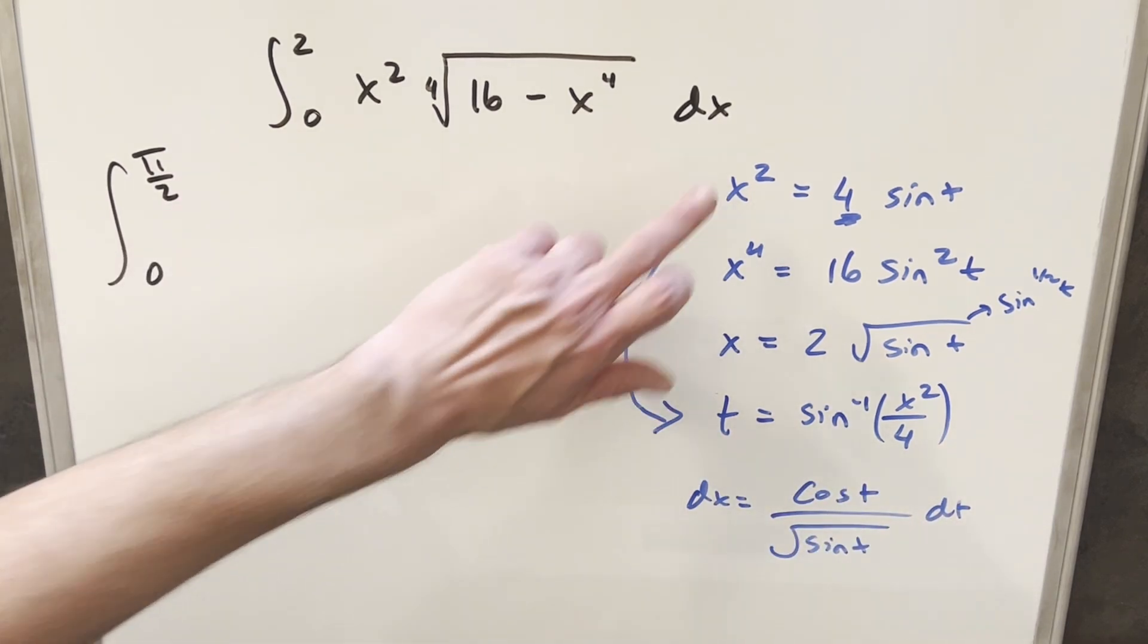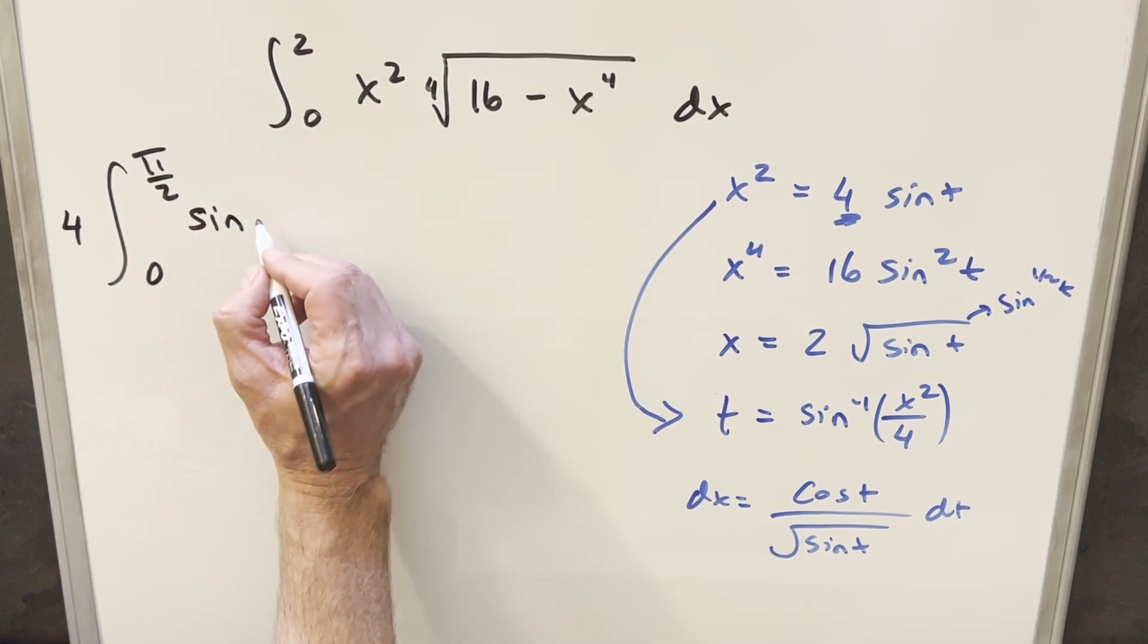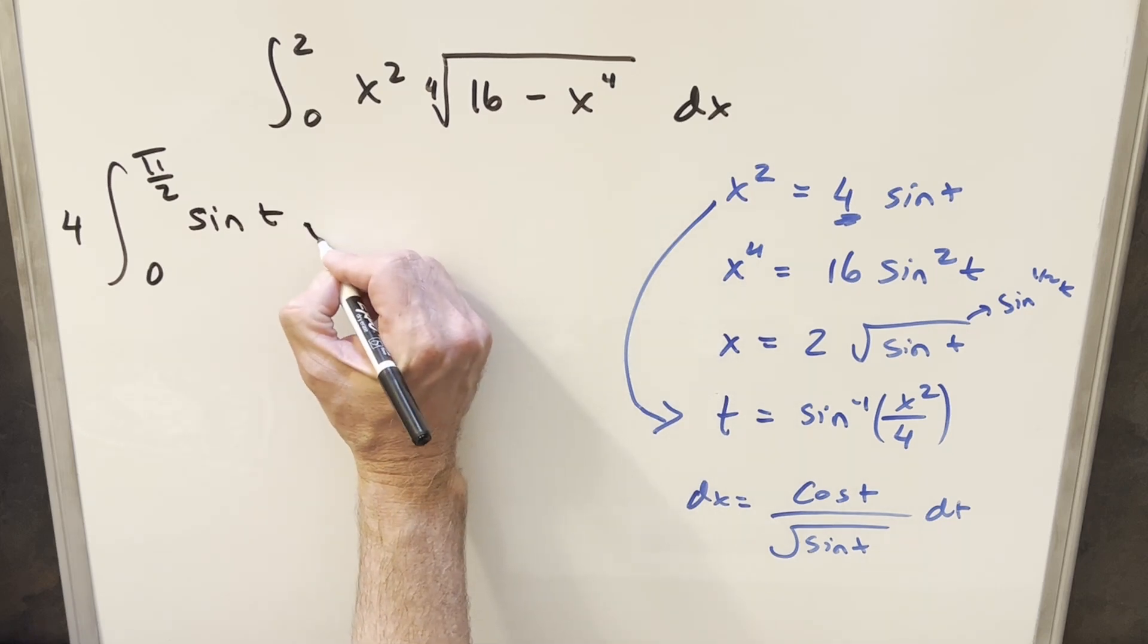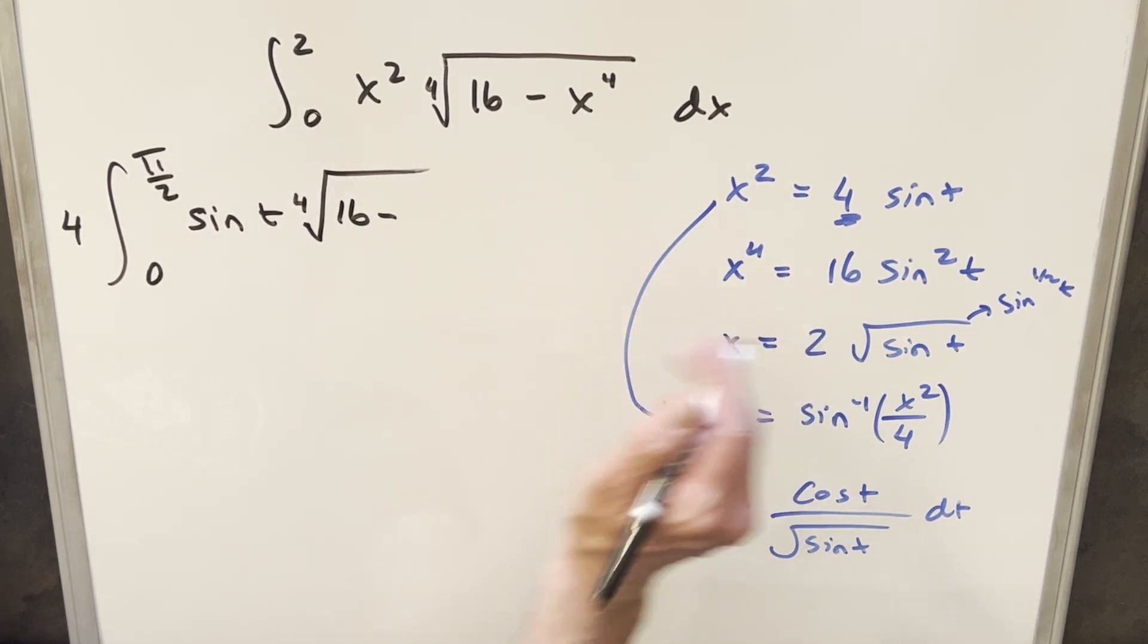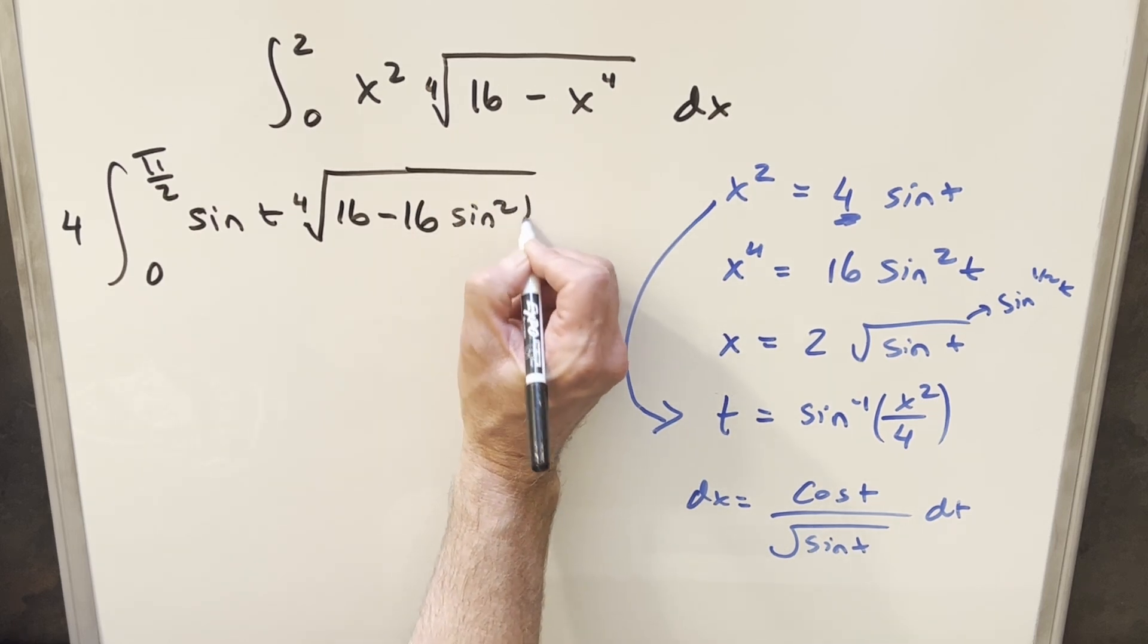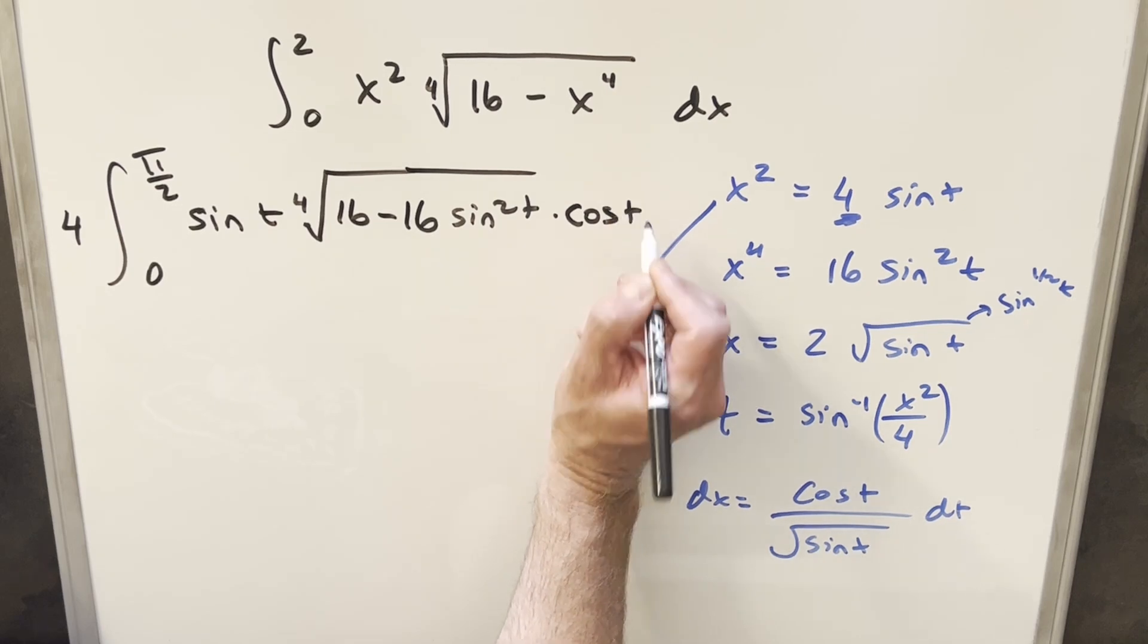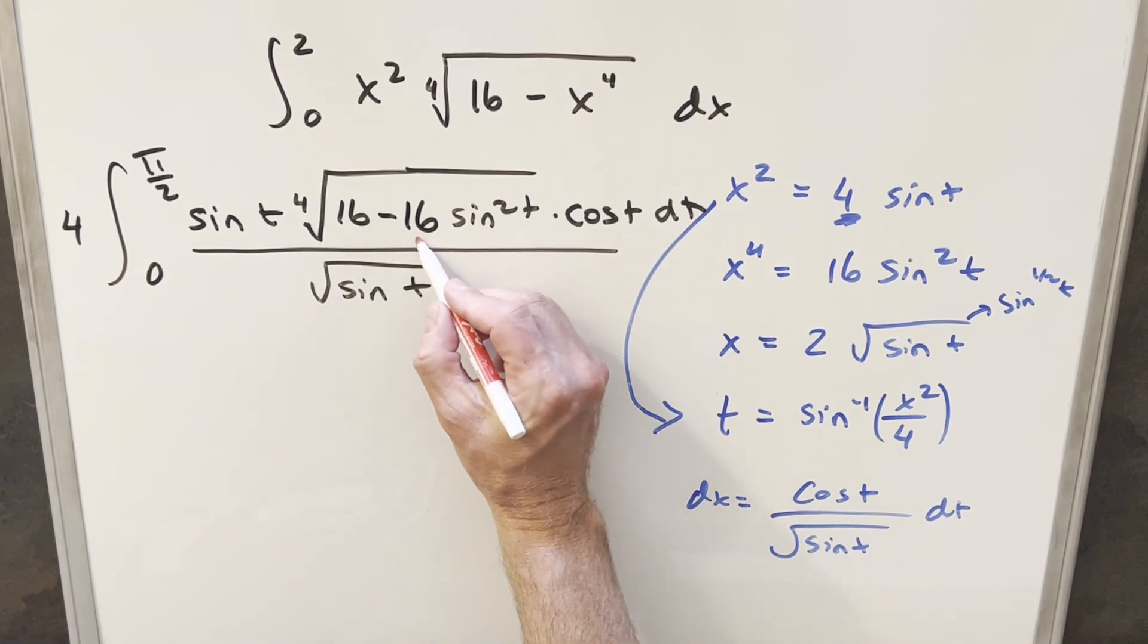Then for our x squared value, what we have is 4 sine t. Let's take the 4 up front just to get rid of that. So we're going to have sine t. This whole thing here, so we still have a fourth root, 16 minus x to the fourth. So this is going to be 16 minus 16 sine squared t. dx is going to give me, kind of running out of space, cosine t dt. And we have this square root of sine t over here.